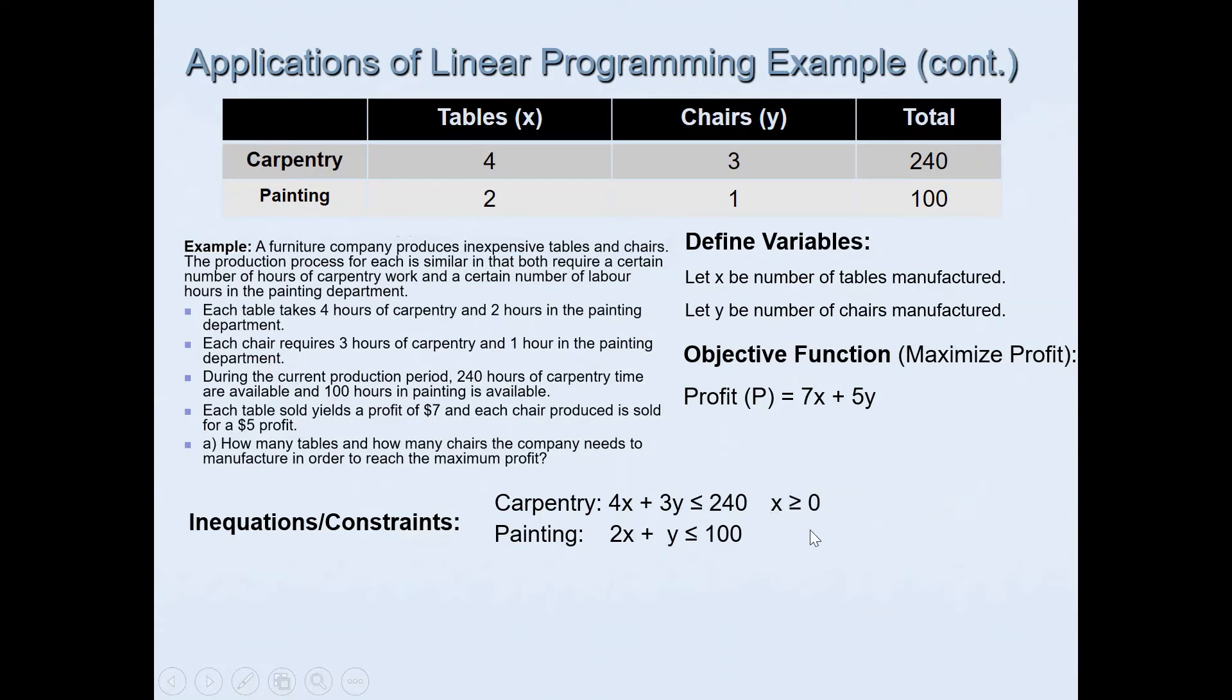Then we have non-negativity constraints. We have x is greater than or equal to zero and also y is greater than or equal to zero. We cannot produce negative number of tables and chairs, so it has to be at least zero, means zero or more. Then what we will do is we'll quickly graph these using Desmos and then we'll find the feasible region and the vertices that go with that.